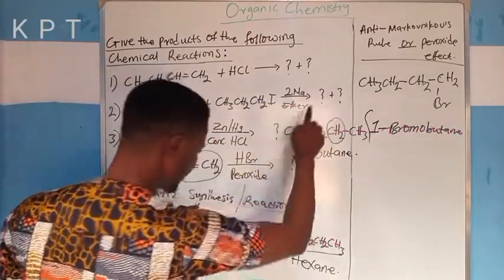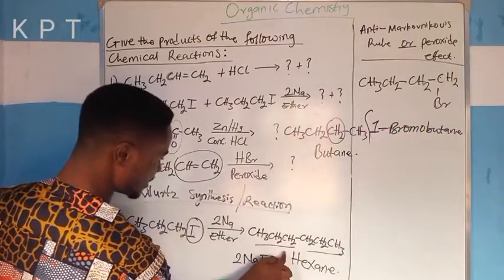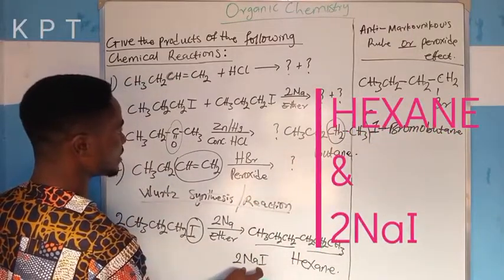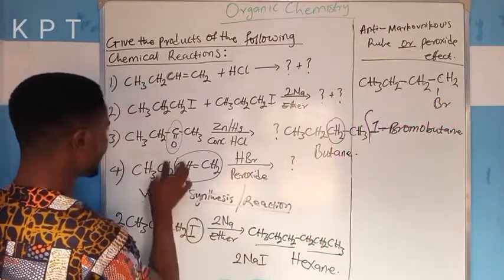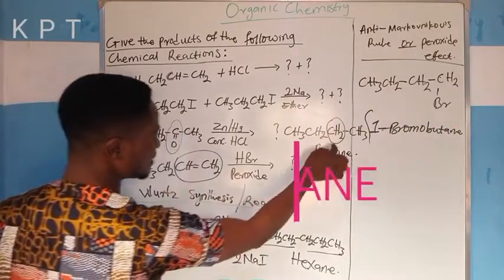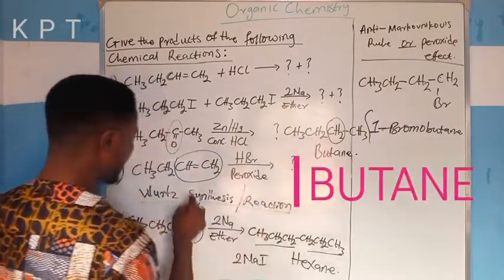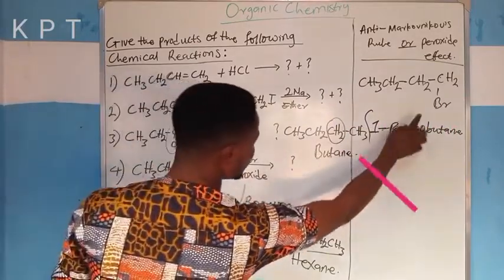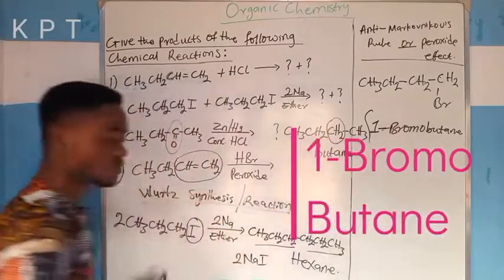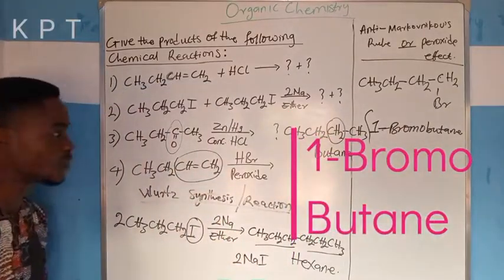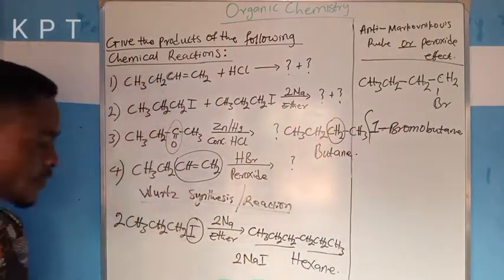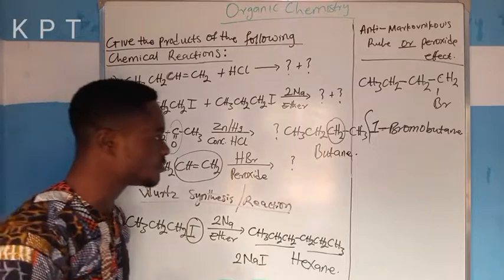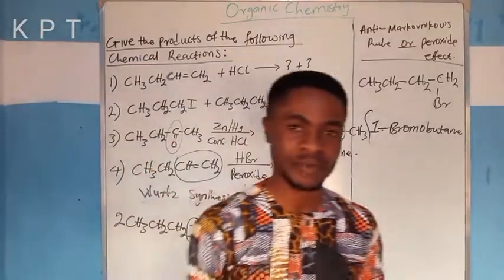What I am going to have for the Wurtz reaction is hexane and two molecules of sodium iodide. And finally, what I am going to have for the Clemmensen reduction is butane, and for the fourth reaction, 1-bromobutane. This is actually the gist of this reaction. Thank you and God bless you for watching the video to the end.